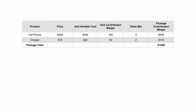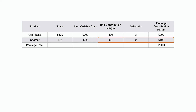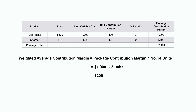The contribution margin for one cell phone is $300. Multiplying this by the three phones in the sales mix brings an expected contribution margin of $900 from phones alone. For the charger, each unit brings a contribution margin of $50 — the $75 price minus $25 variable costs — multiplied by two chargers in the package for a contribution margin of $100. Adding these together, the total expected contribution margin for this package is $1,000. To get the weighted average contribution margin, we take this $1,000 total package contribution margin and divide it by the total number of units in the package, which is 5 units, giving us a weighted average contribution margin of $200 per unit.